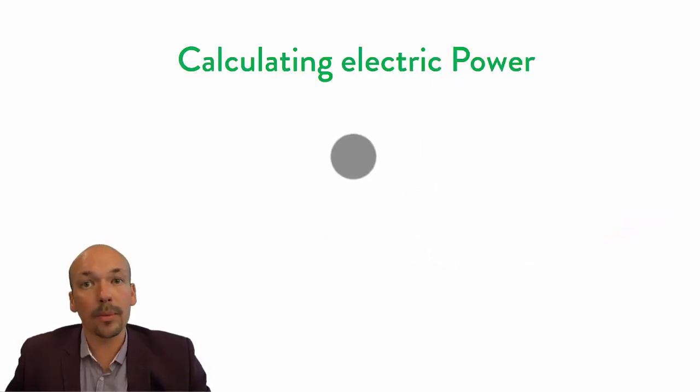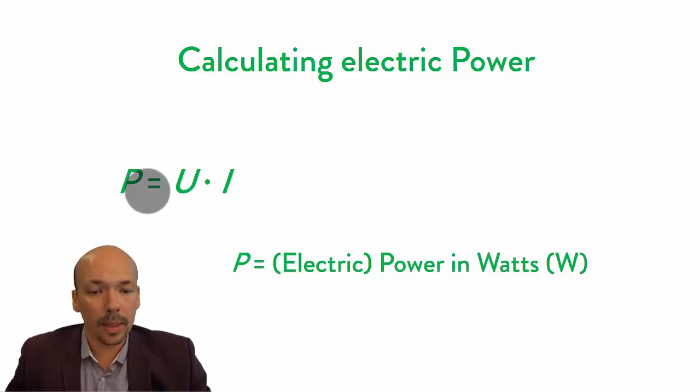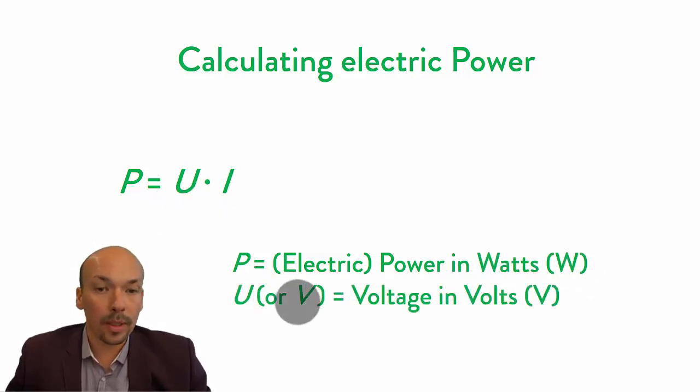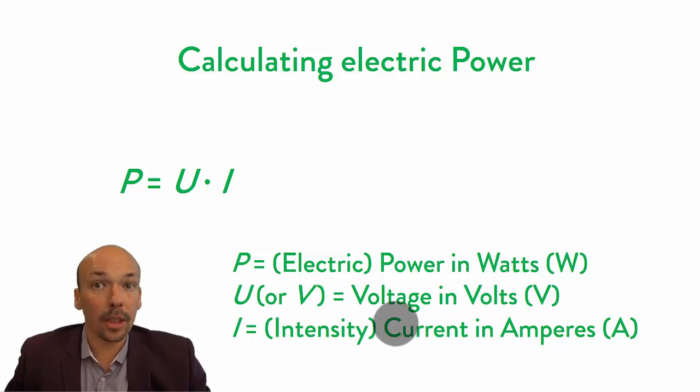I'm going to explain how much energy it is and how you can calculate it. We need this equation to calculate the electrical power. We have the capital P for electrical power measured in watts (W). Then we have U or V, depending on your book, for voltage in volts (capital V). And we have I for the intensity or current in amperes (capital A). If you multiply the volts with the amperage, then you know the watts. That's the electrical power of the device and the actual energy it gets.